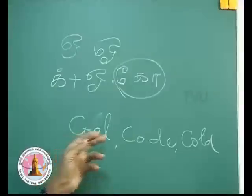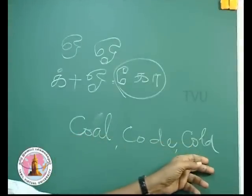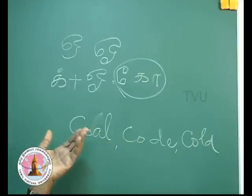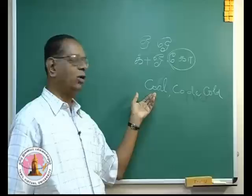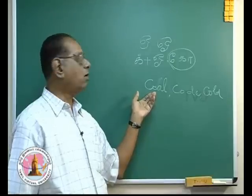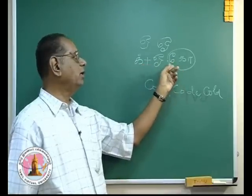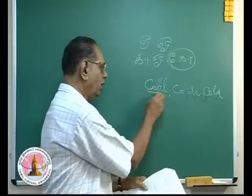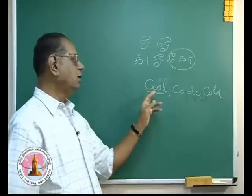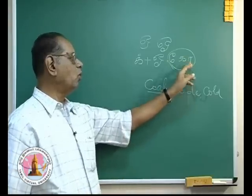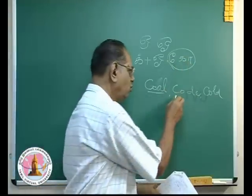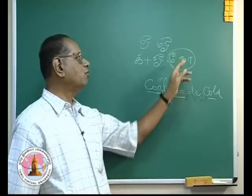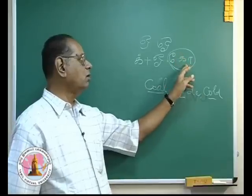Words like 'cold' — I am using these words only to show the actual pronunciation of this combination of consonant and vowel. The C, O, A put together give you the sound 'co', and here C plus O will give you that sound of 'co', the long O.